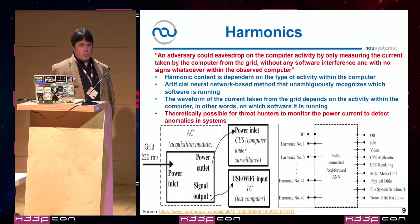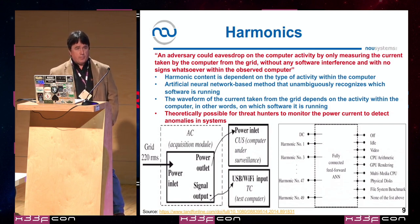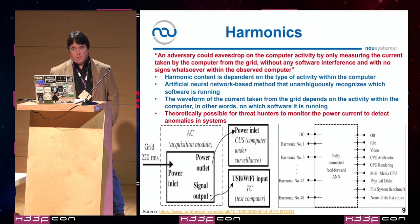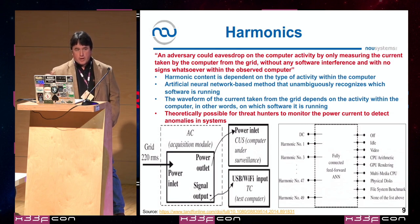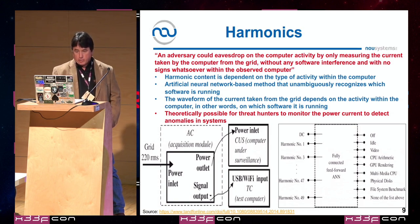Harmonics from current draw are also worth considering. It's apparently possible to study the current being drawn by computer systems and detect what software is running. This could be a way for threat hunting teams to detect malware running on targeted critical infrastructure systems — software not in our inventory, outside of configuration management and control. Maybe monitoring and baselining current harmonics, then applying machine learning to correlate it with other logs, could find that anomaly — the needle in the haystack.